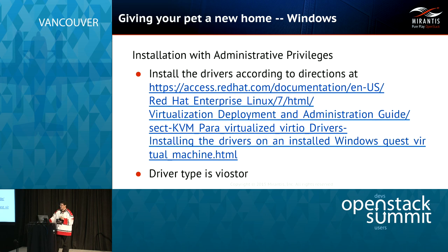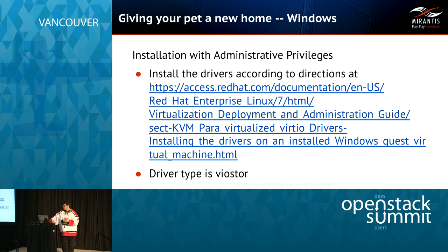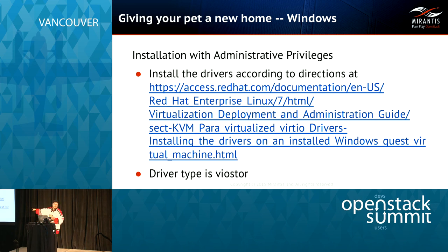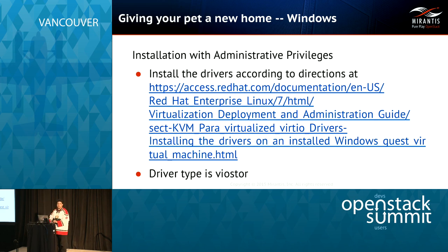First, get the drivers from the URL — it's an ISO. If you have admin privileges, install daemon tools or some other emulator and mount the ISO. Make sure you install SATA drivers even though it says you have to reboot, otherwise this will not work. Then follow the long set of instructions at the provided URL. When you go to do the installation, it will ask about driver type — choose 'VirtIO storage'. That took me about three hours to figure out, and then Darren looked at me and said it says it right there.